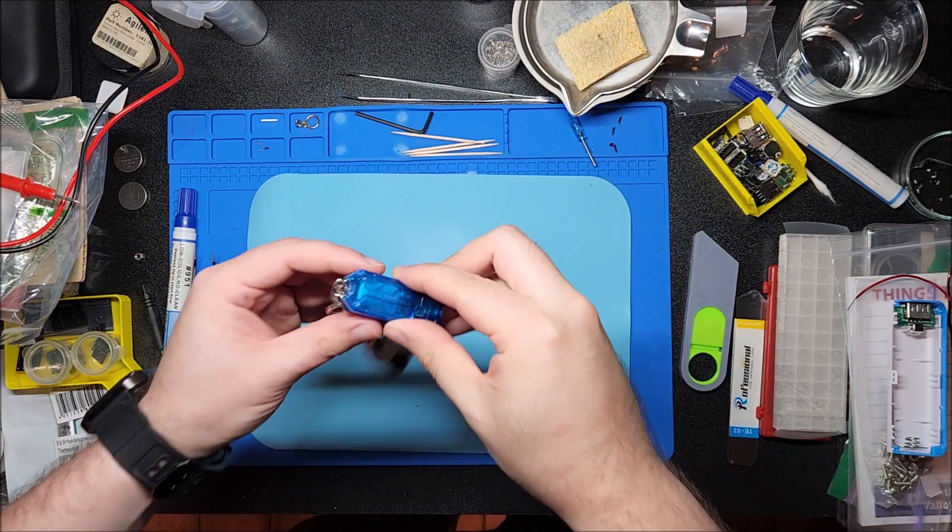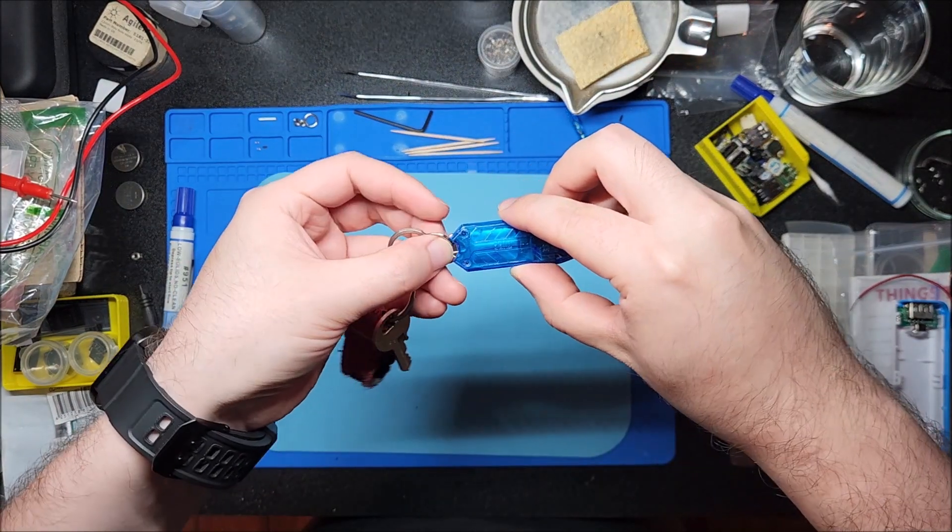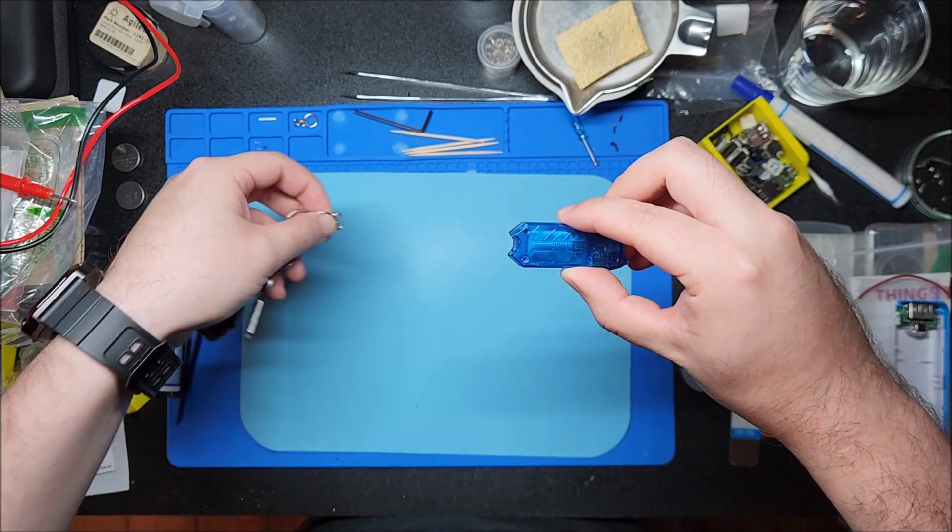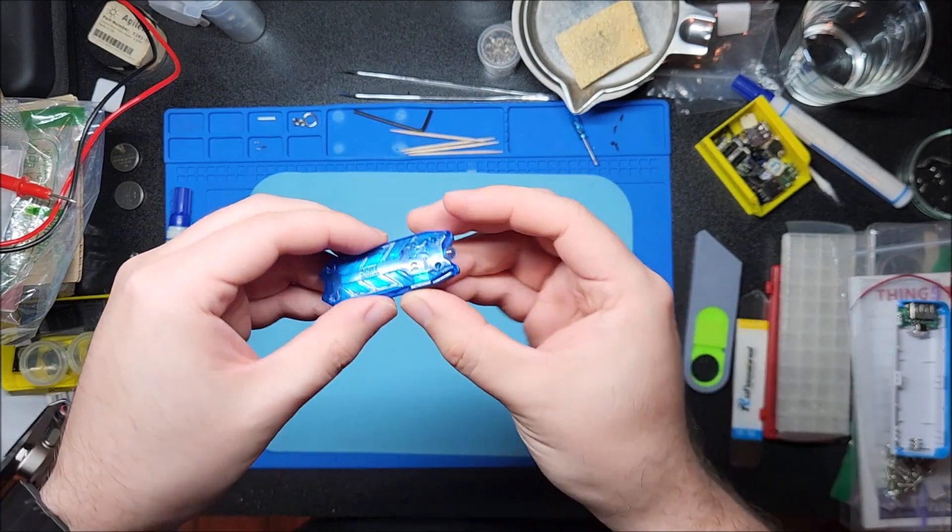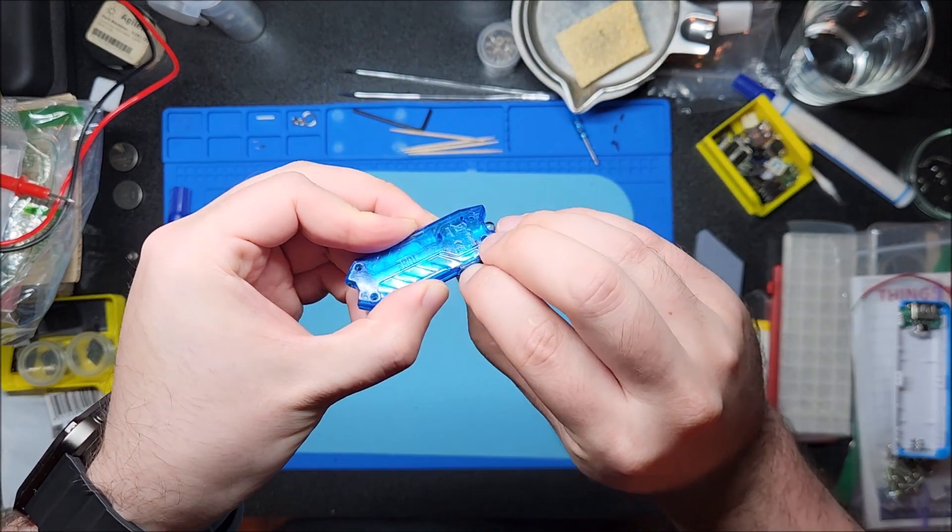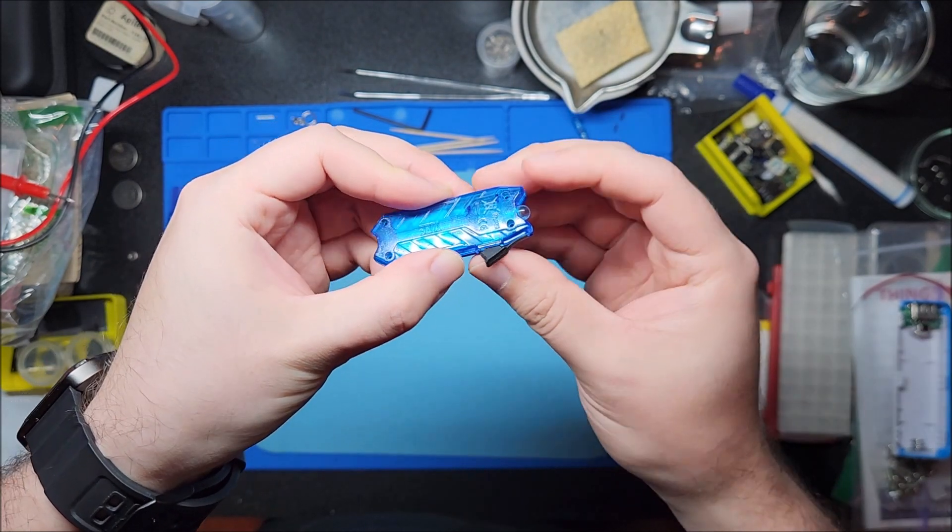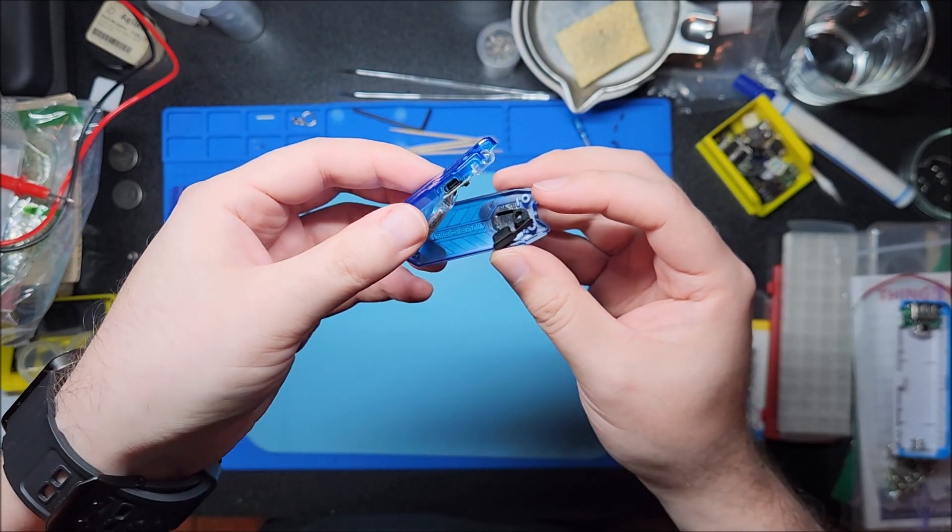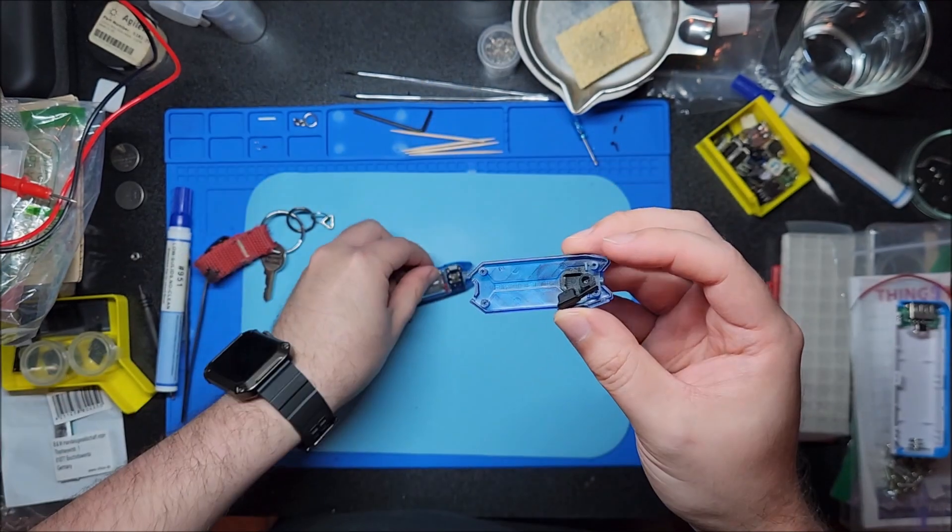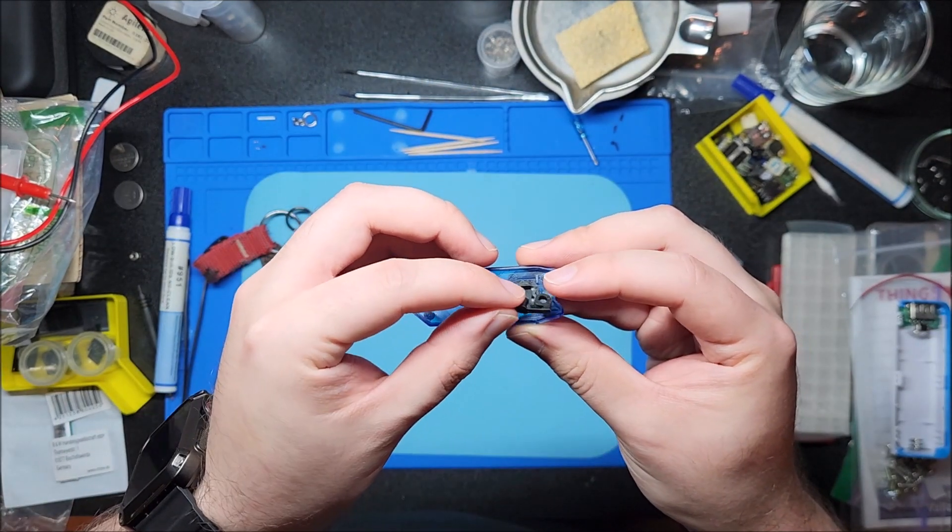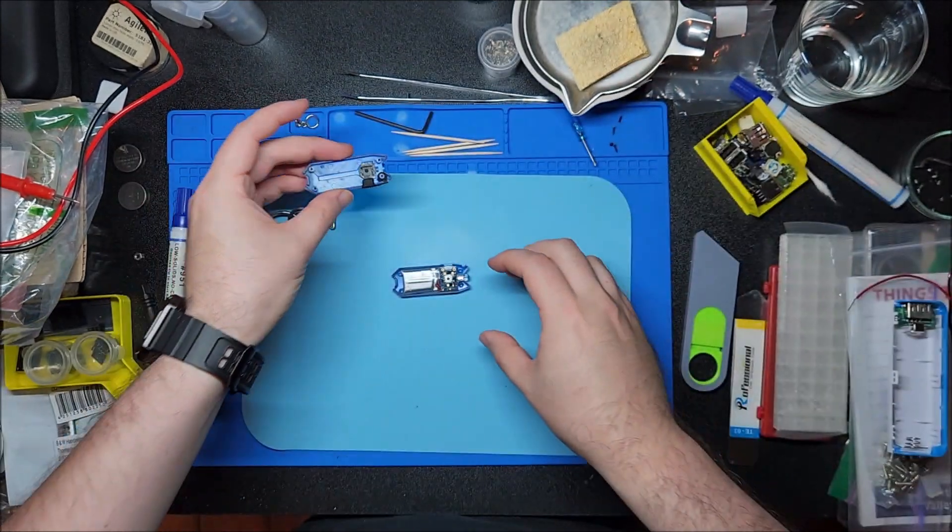Remove the screws. Watch out, this back piece with the actual keychain part is going to come out and you might have to remove the USB port cover. The whole thing just sort of plops out.